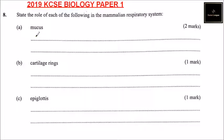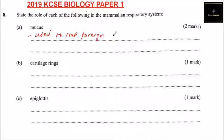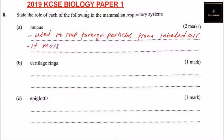Question number eight: state the role of each of the following in the mammalian respiratory system. So we have mucus. The respiratory system has mucus starting from the nose, and the role of the mucus is to trap foreign particles from the inhaled air. You can also say it moistens the air inhaled.